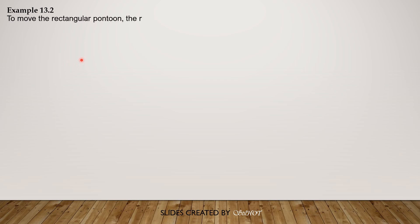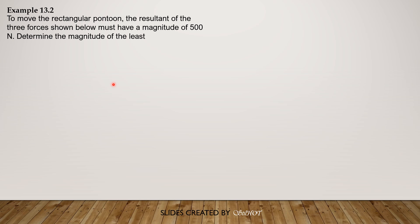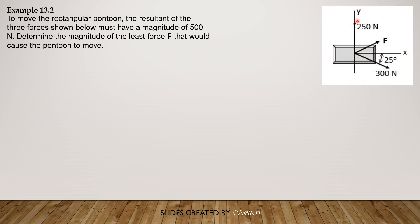Example 13.2: To move the rectangular pontoon, the resultant of the three forces shown must have a magnitude of 500 newtons. Determine the magnitude of the least force F that would cause the pontoon to move. For F to be minimum, the resultant of the given two forces should be in the direction of F. We have to prove that the direction of F should also be the direction of the resultant of the given two forces.